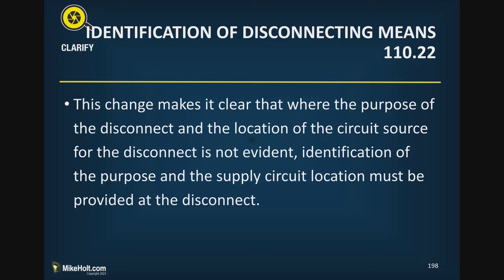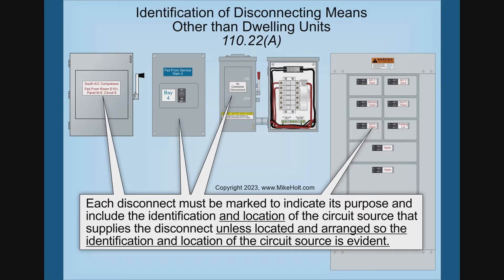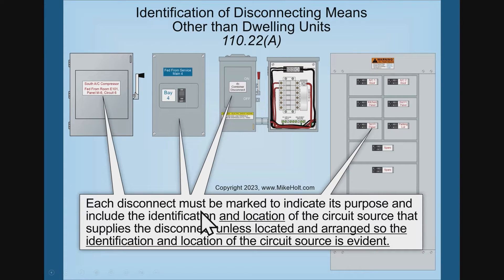identification of the purpose and the supply circuit location must be provided at the disconnect. Each disconnect — and there are a lot of times this comes up in the code —